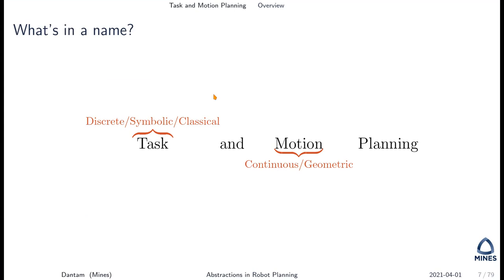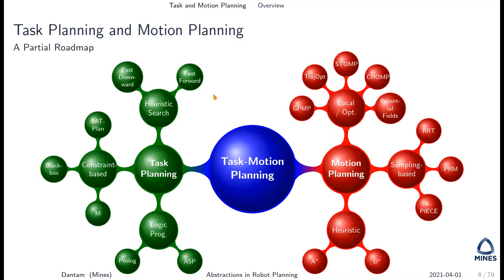We overload terms in robotics — 'task' can mean many things. Here we're talking about discrete or symbolic or classical planning, and 'motion' refers to continuous or geometric planning. Here's a partial roadmap of different planning approaches: task planning using heuristic search, constraint-based methods, or logic programming; motion planning using heuristic methods, sampling-based planning, or optimization-based approaches. Heuristics appear on both sides, but the key issue is how you search these spaces.